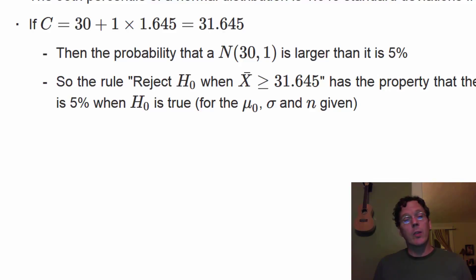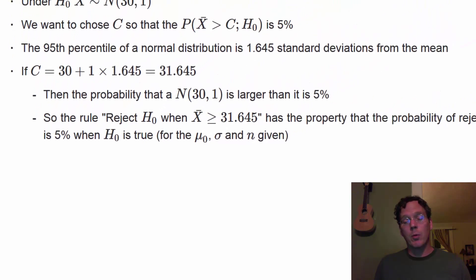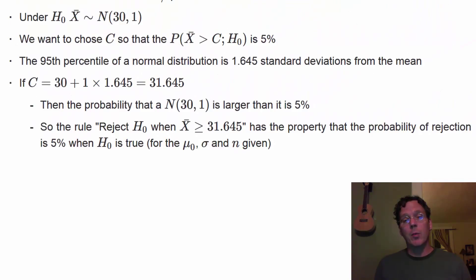So just to reiterate, the probability that a normal with a mean of 30 and a variance of 1 is larger than this constant is 5%. So the rule, reject the null hypothesis when you receive an average larger than 31.645, has the property that we will reject 5% of the time when the null hypothesis is true.